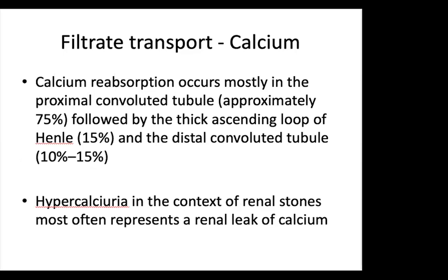For calcium, reabsorption occurs mostly in the PCT (around 75%), followed by the thick ascending loop of Henle (around 15%), and the DCT (around 10–15%). In the PCT and loop of Henle, transport is primarily passive across the paracellular route via claudin-2 calcium tight junction channels and C16 channels. Hypercalciuria in the context of renal stones most often represents a renal leak of calcium. For stone prevention, hypercalciuria is treated with thiazide diuretics to increase urinary calcium excretion.